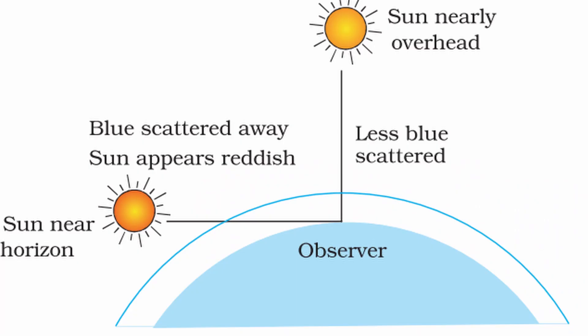Similarly, agar aap subah suraj ko dekhe, to woh horizon se neeche hota hai, aur usse aati hui rays ko atmosphere mein kaafi zyada distance travel karna padta hai. Jis karan lower wavelengths scatter ho jati hain, aur jo light observer ke paas pahunchti hai, woh keval higher wavelengths ki light pahunchti hai. Isliye, usko sun red dikhta hai.